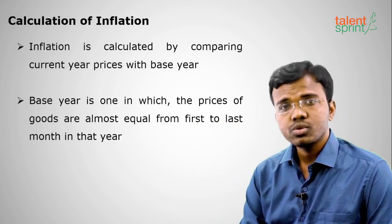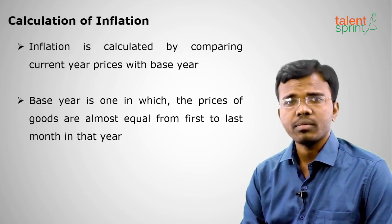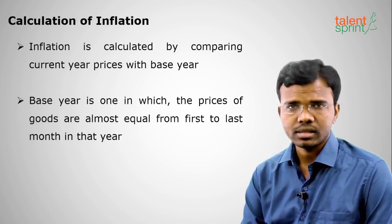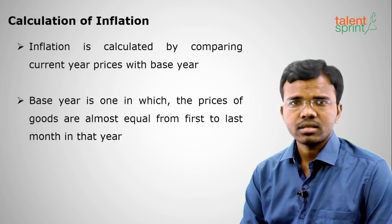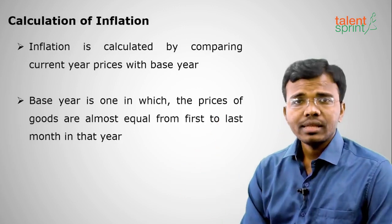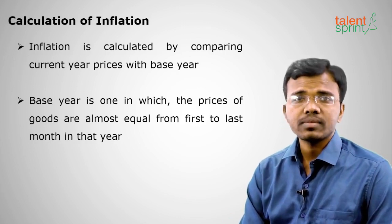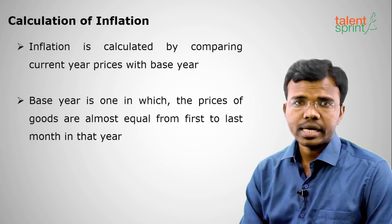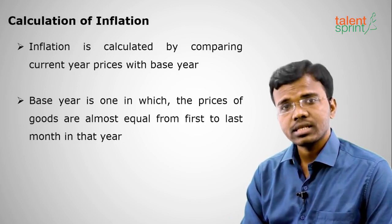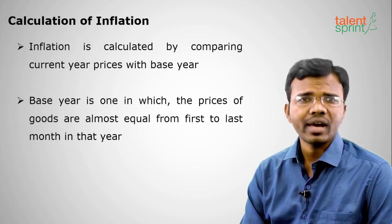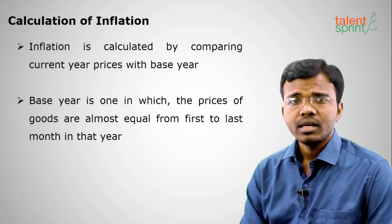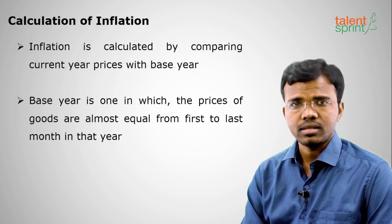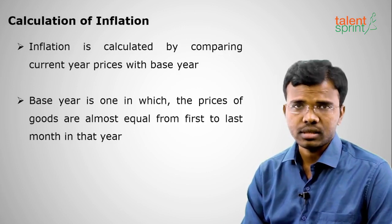That base year is chosen by the government and may vary from time to time. In that year, from the first month to the last month, the prices are almost constant. It may be a calendar year, that is January to December, or a financial year. The financial year or fiscal year runs from 1st April to 31st March of the next year.